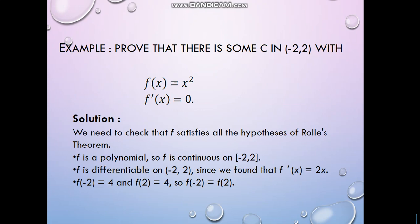Let's see an example for Rolle's theorem. Prove that there is some c in the interval minus two to two with f(x) equals x squared and f'(c) equals zero. The function is f(x) equals x squared.